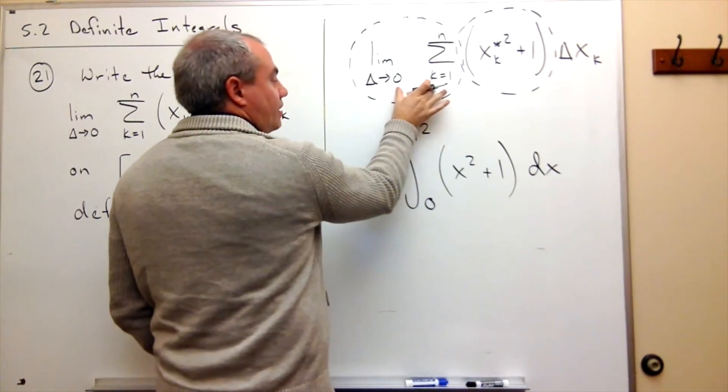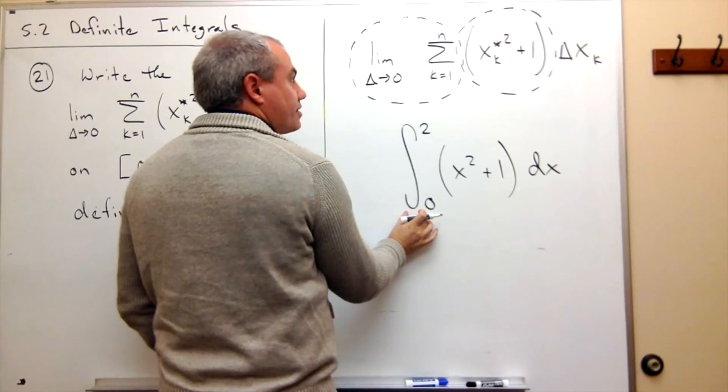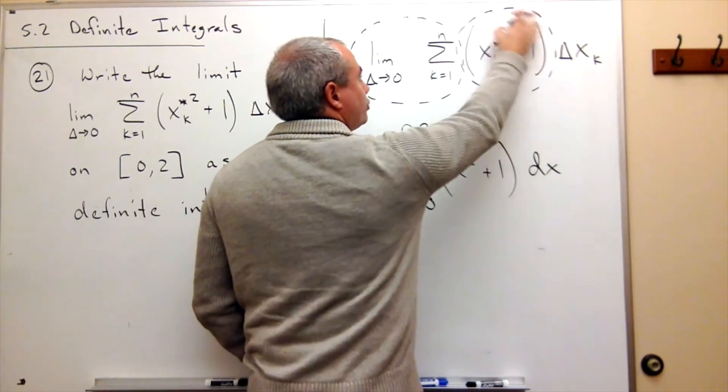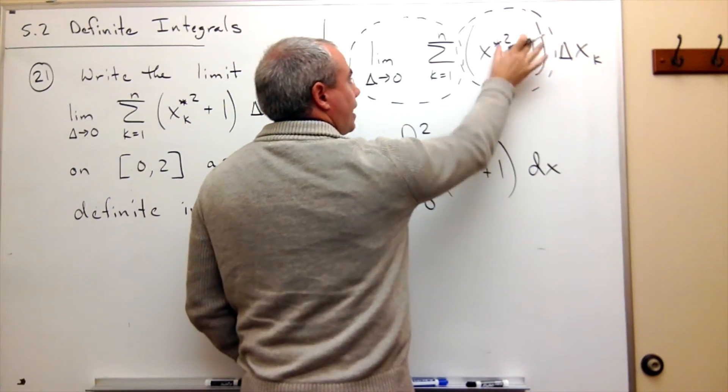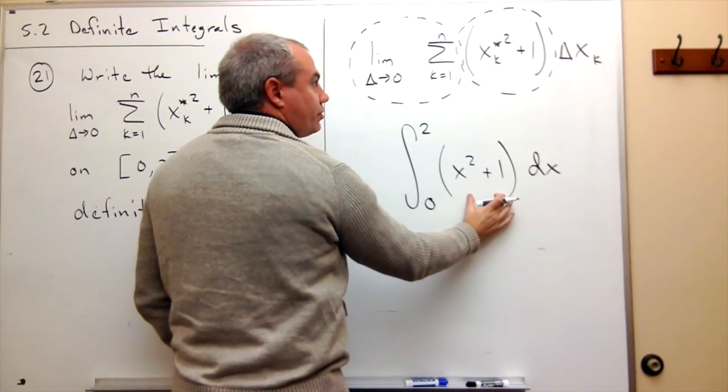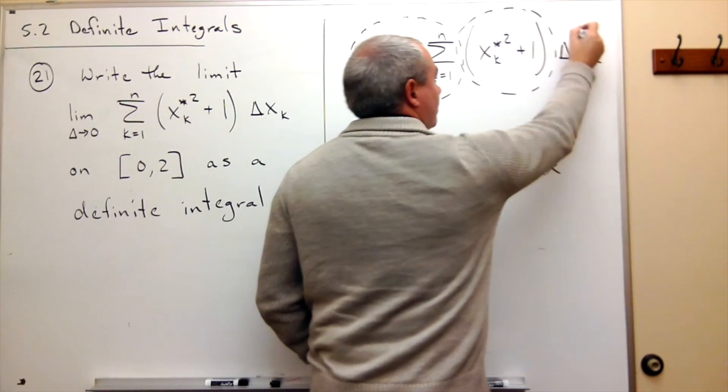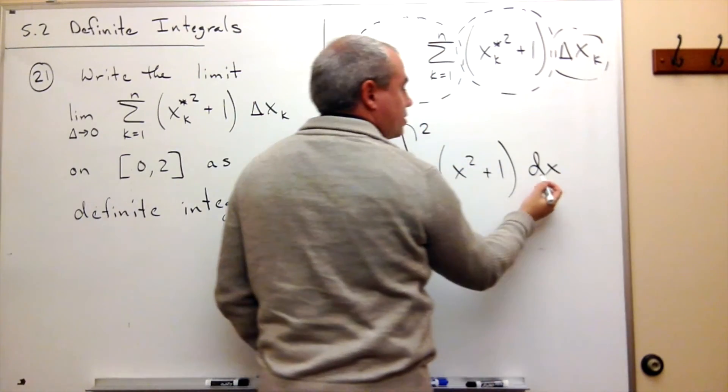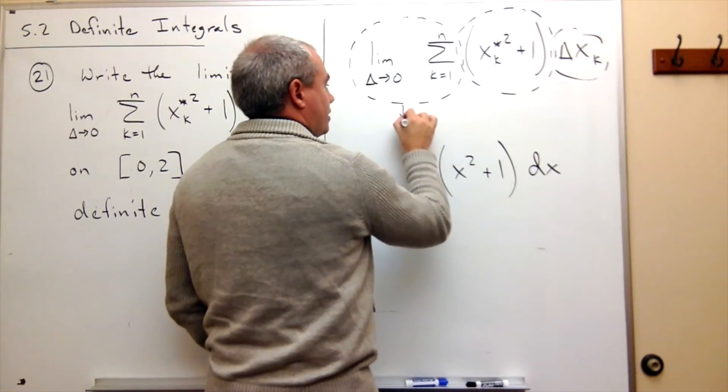So the limit of the sum becomes an integral sign, the functional part that involves an x sub k star becomes our function, and our delta x sub k, this piece, becomes our dx.